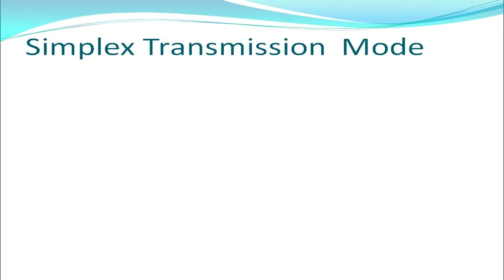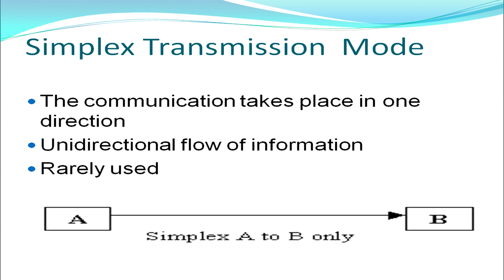First is simplex transmission mode. As the name says, this is the simplest mode of transmission. There are two devices, two computers, connected by one single transmission medium, and communication takes place only in one direction — a unidirectional flow of information. The wire can transmit data either from A to B or B to A, but not both. Since this causes a lot of time wastage, this method is rarely used.